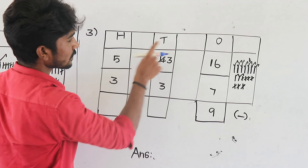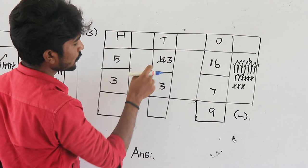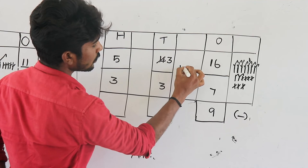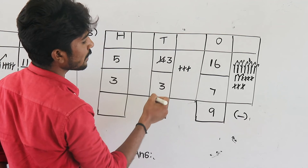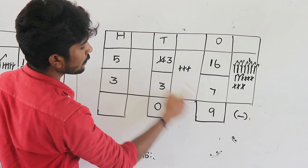Next, tens value. Compare the two numbers — same numbers. First number is 3, draw 3 lines: 1, 2, 3. Lower part is also 3, cancel 3 lines: 1, 2, 3. Count remaining — answer is 0. So 3 minus 3 is equal to 0.